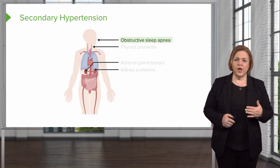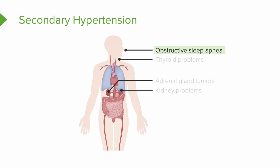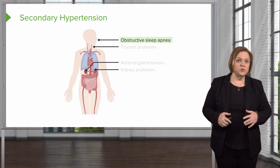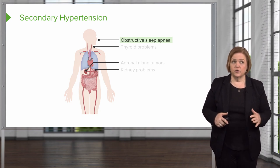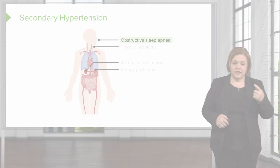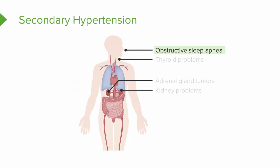Here are some examples of secondary hypertension causes. Did you realize that obstructive sleep apnea is a cause of secondary hypertension? So the snoring isn't the worst problem — not only the respiratory issues, it can also cause hypertension. Kidney problems are huge: the kidneys are super important in controlling blood pressure, so if a patient is having renal problems, they're likely having hypertension problems too. An adrenal gland tumor is another cause — the adrenal gland medulla releases norepinephrine and epinephrine, so with a tumor, things go out of control and you get elevated blood pressure. Thyroid problems can also cause issues with blood pressure.